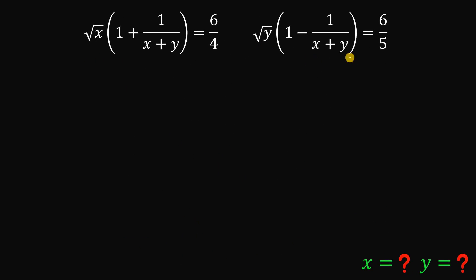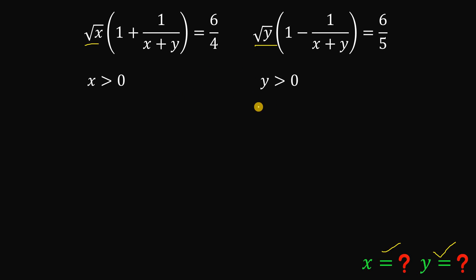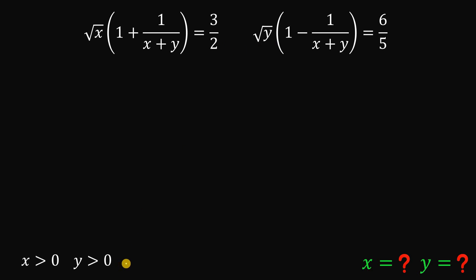Alright, so given these two equations, the goal is to find x and y that satisfies them. One thing to notice is we have square root of x and square root of y, which means x must be greater than 0 and y is also greater than 0. Also notice 6 over 4 — we can simplify this as 3 over 2. We will use this condition that x and y are both greater than 0 later on.